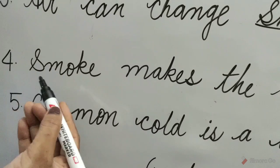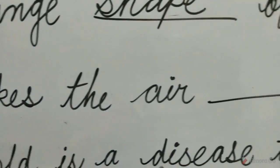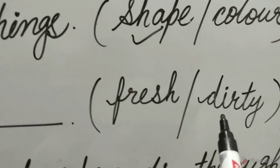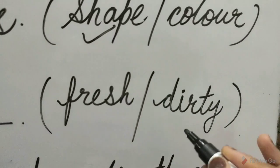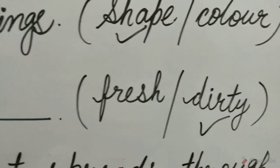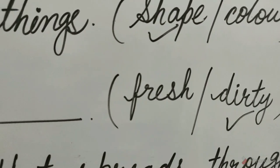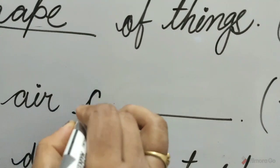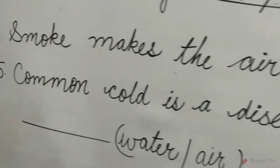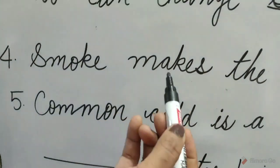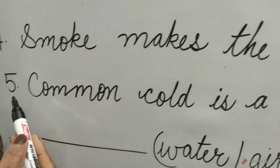Question 4: Smoke makes the air dash, fresh or dirty. Dirty option is correct. So we tick the option dirty and write here dirty. Smoke makes the air dirty.